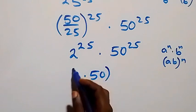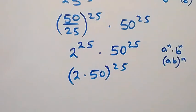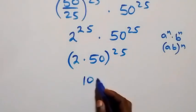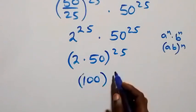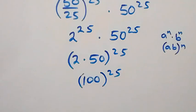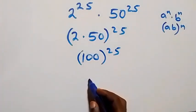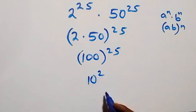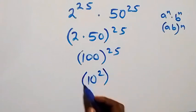What we have becomes (2 times 50) raised to power 25. And 2 times 50 gives 100, so we have 100 raised to power 25. From here, we can also write 100 as 10 squared — that's 10 times 10 — then raised to power 25.